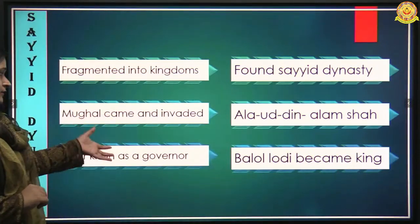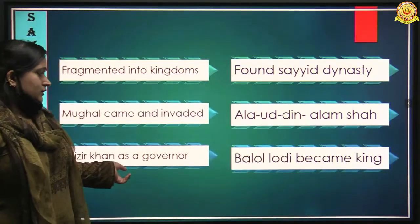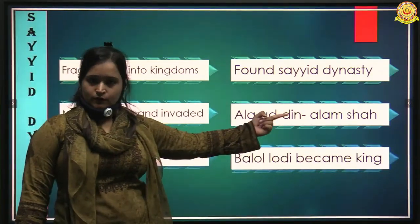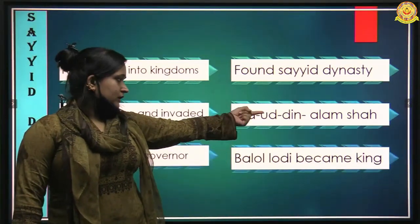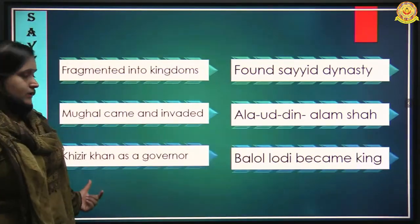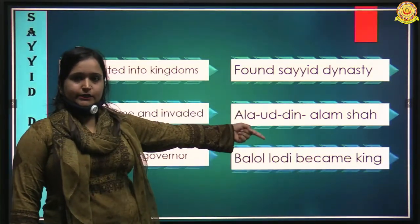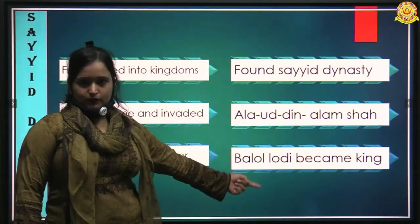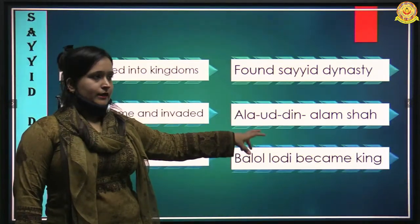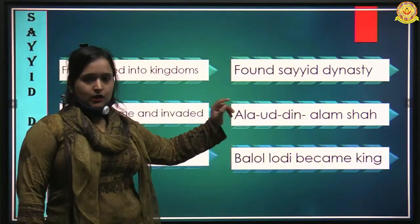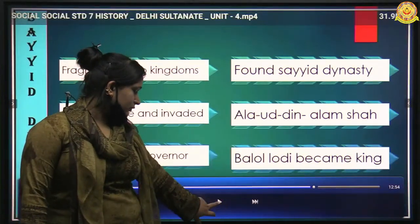The last ruler of the Sayyid Dynasty was Alauddin Alam Shah. He was a weak ruler and could not maintain the empire. Bahlul Lodi attacked the Delhi throne, won the battle, defeated Alauddin Alam Shah, and started his own dynasty — the Lodi Dynasty. Bahlul Lodi was the first ruler of the Lodi Dynasty.